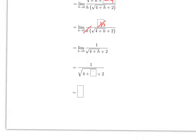We get 4 plus 0 when I plug the limit in, and then we get 1 over 2 plus 2, which is 1 over 4.